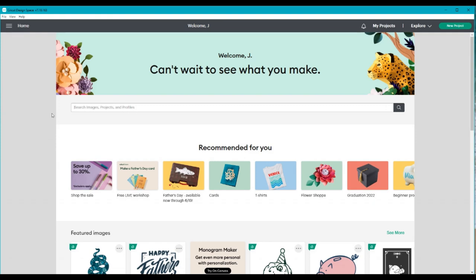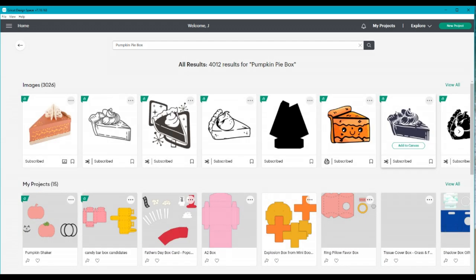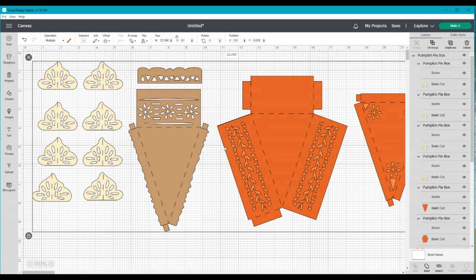All right so I am in Cricut design space and I'm going to type in the search bar pumpkin pie box. I'm going to go over and click on the search button there and it's going to bring up this file which is the one I want to use. I'm going to choose the add to canvas option and it's going to appear on my screen.